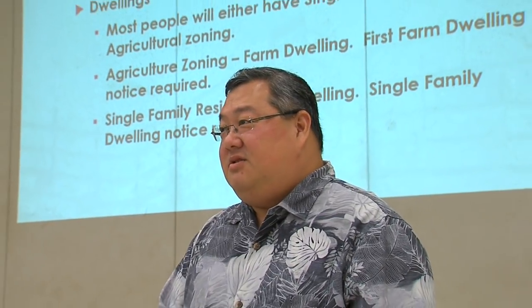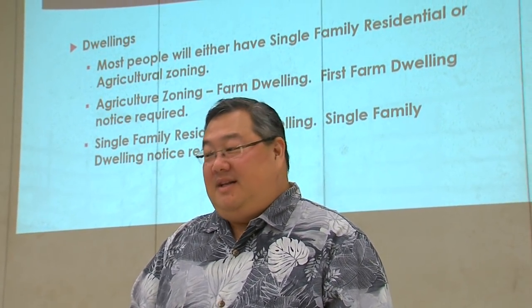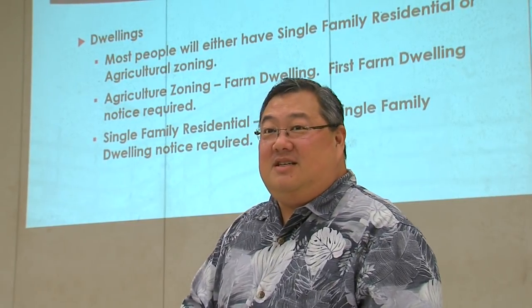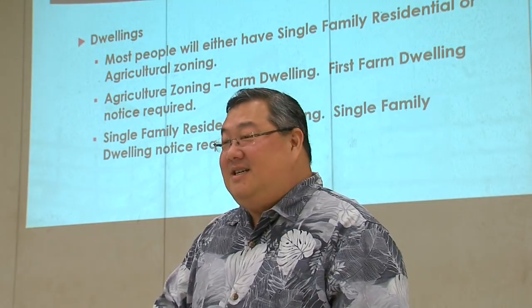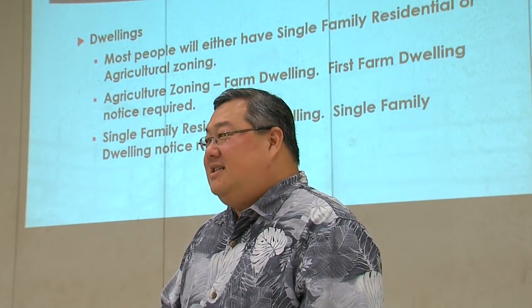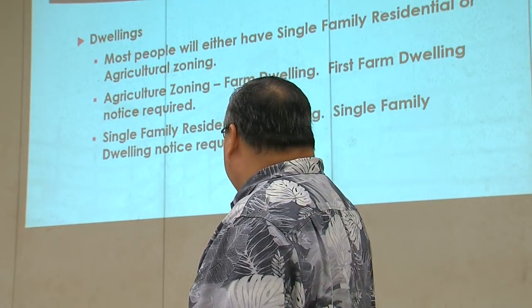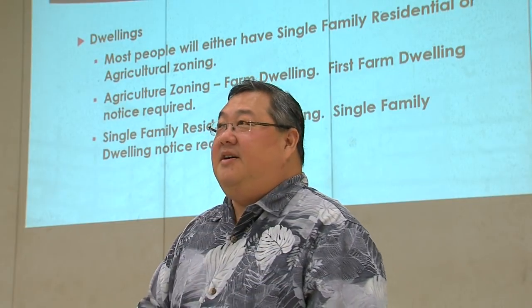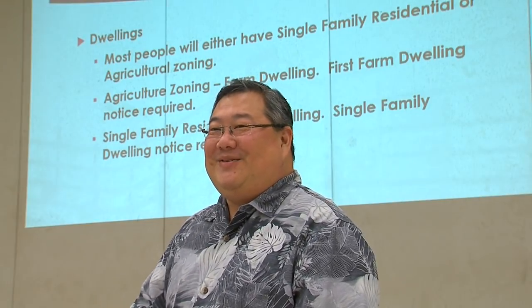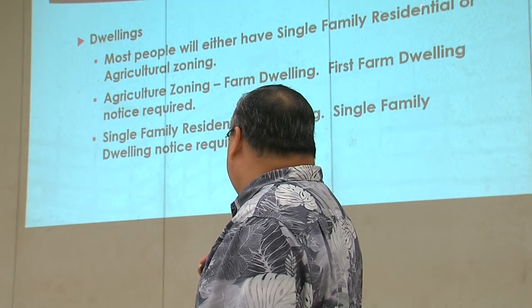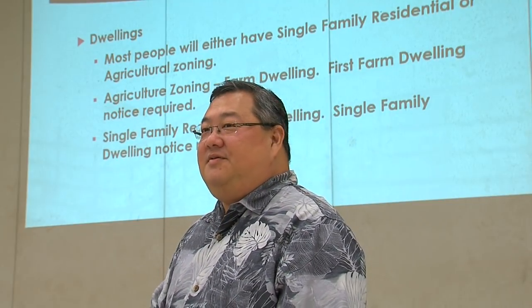Most people will have either single-family residential zoning or agricultural zoning, both of which allow dwellings. However, if you're agriculturally zoned, according to state land use law, you are building a farm dwelling — it's not just a dwelling. It's supposed to be in conjunction with the agricultural use of property, but in this county we allow you to have one. When you come in for your farm dwelling application, you will need to sign a notice letting you know that what you are building is a farm dwelling. Single-family residential is simply a dwelling, and you have a similar form you will need to fill out for the single-family dwelling notice.